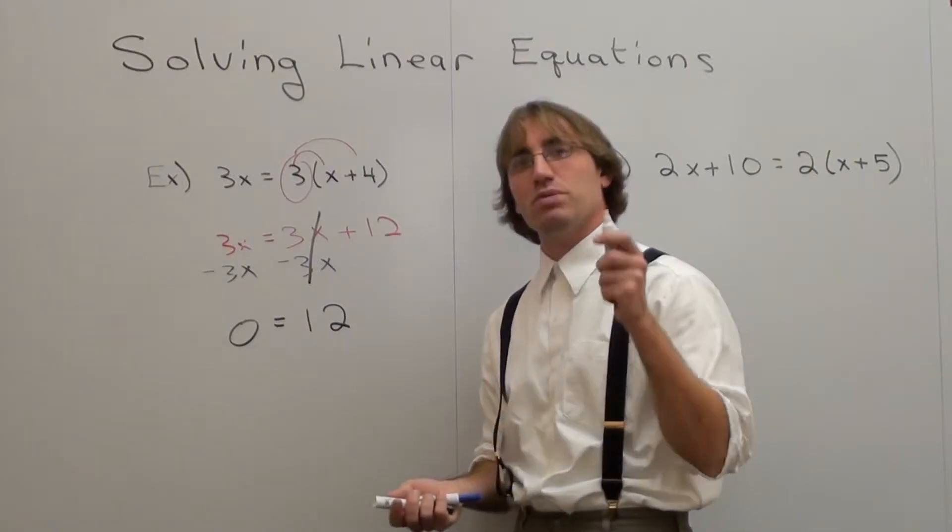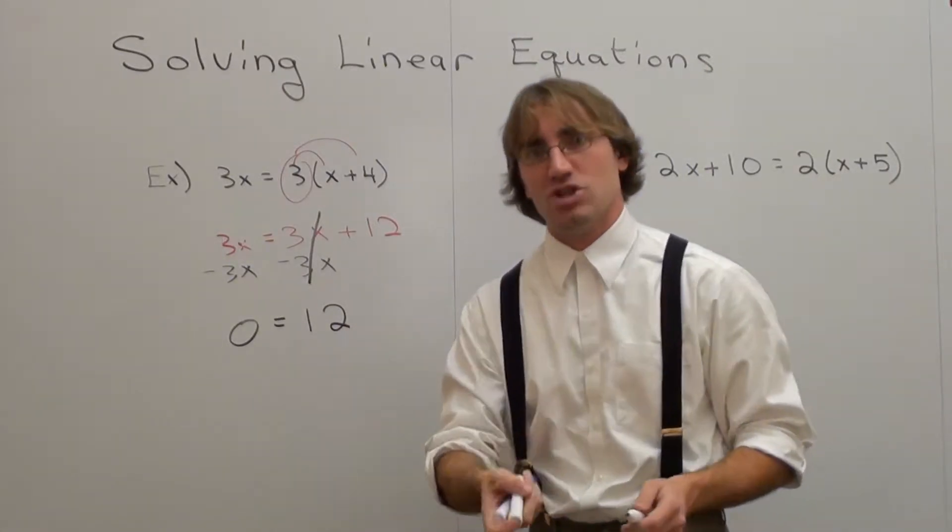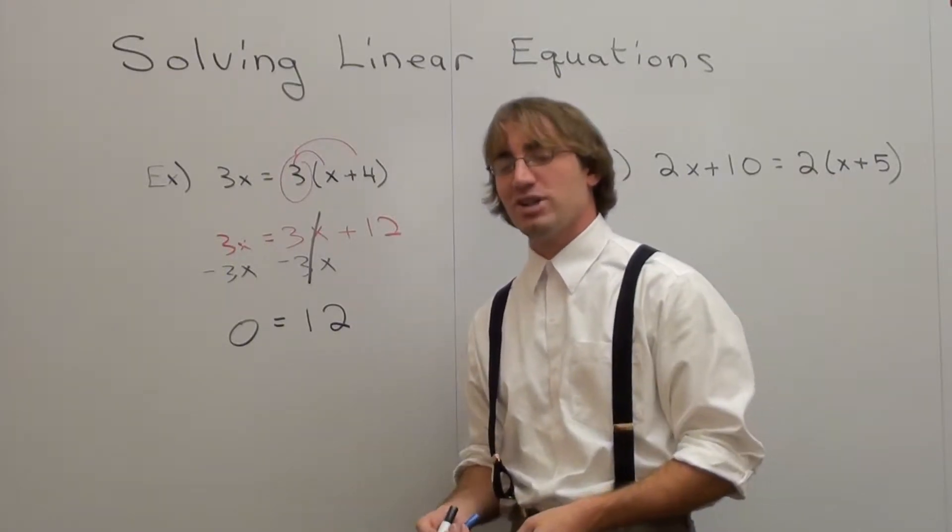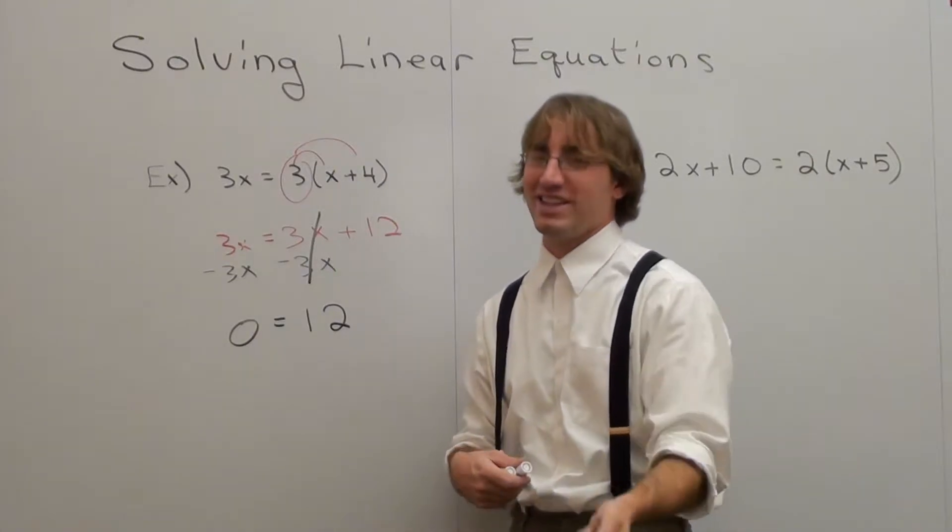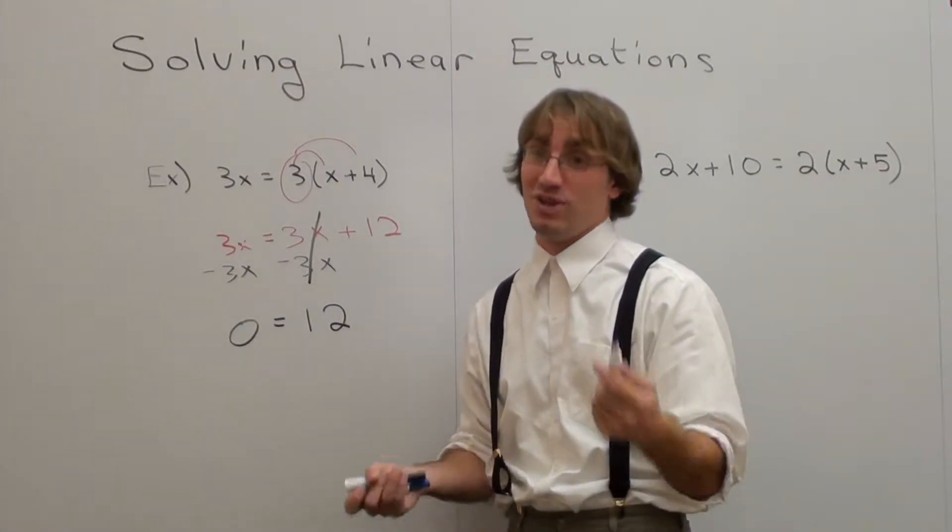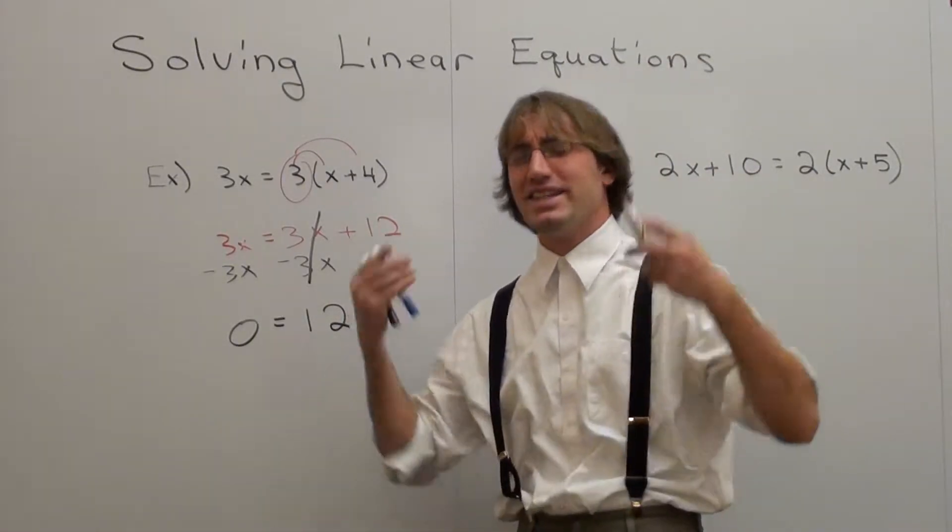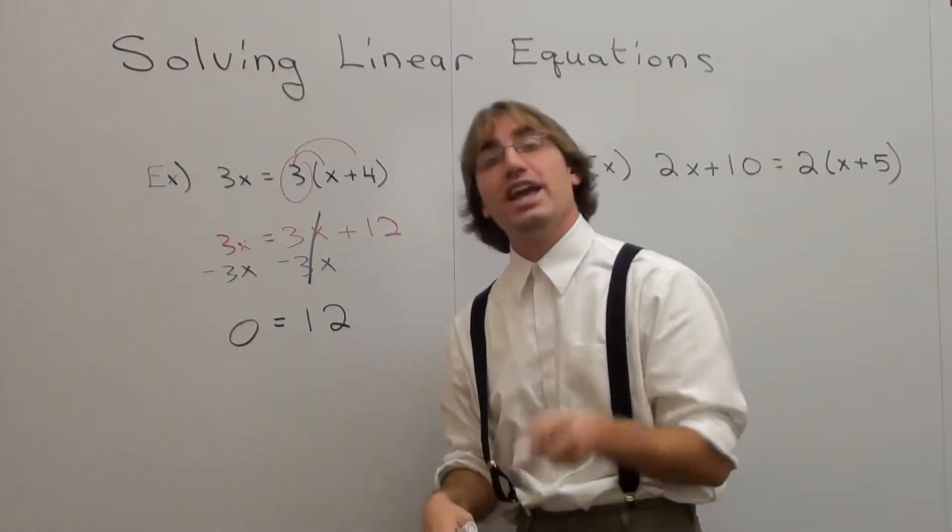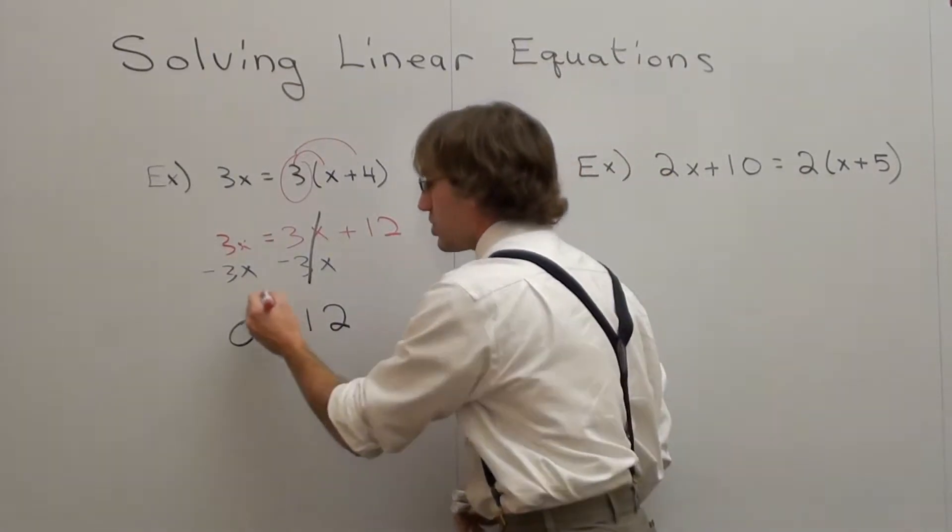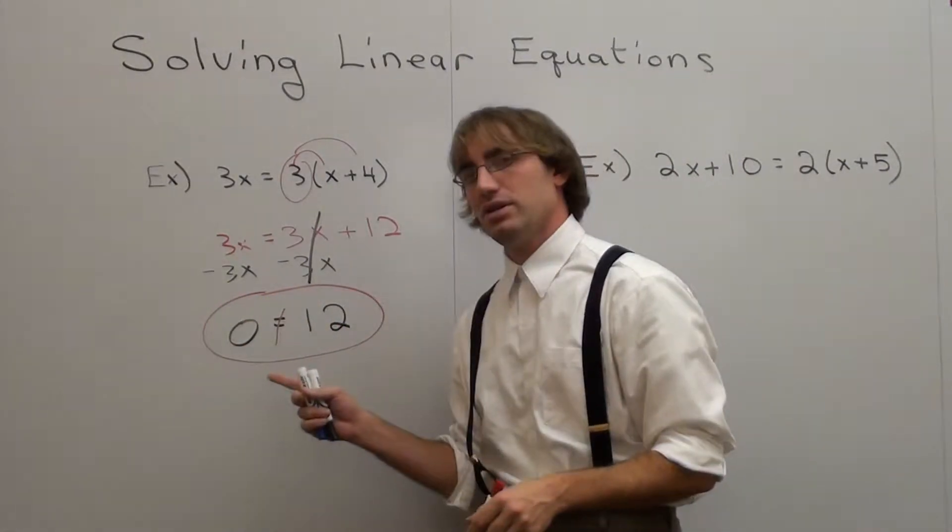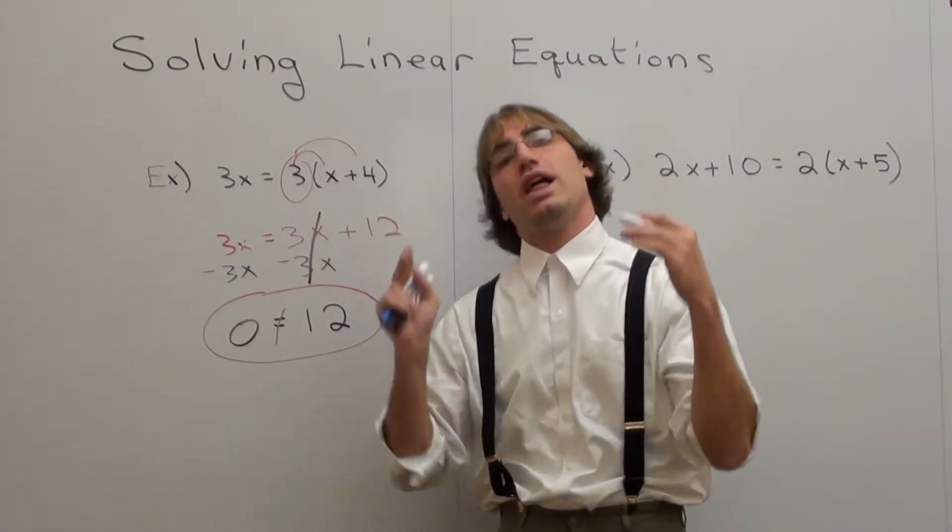There is no x equals a number. It's just 0 equals another number, which it clearly doesn't. Here's a question I ask my students: When is 0 equal to 12? Is it ever equal to 12? The answer is no, it's never equal to 12. They are not equal to each other. And I'm going to circle this. This is the answer. What's the answer? There is no x value that works. There is nothing that you could substitute in that will ever work. The answer is no solution.